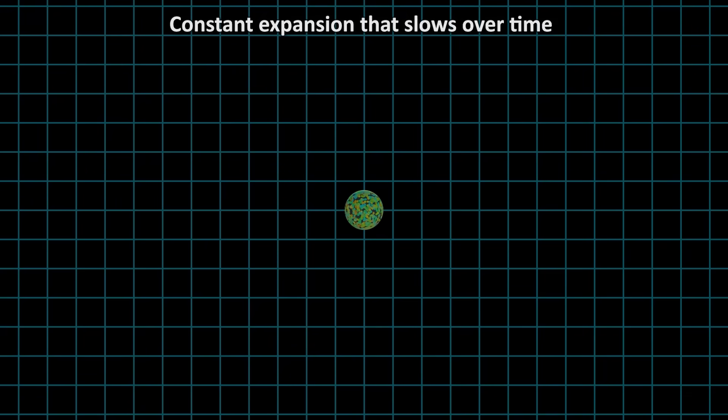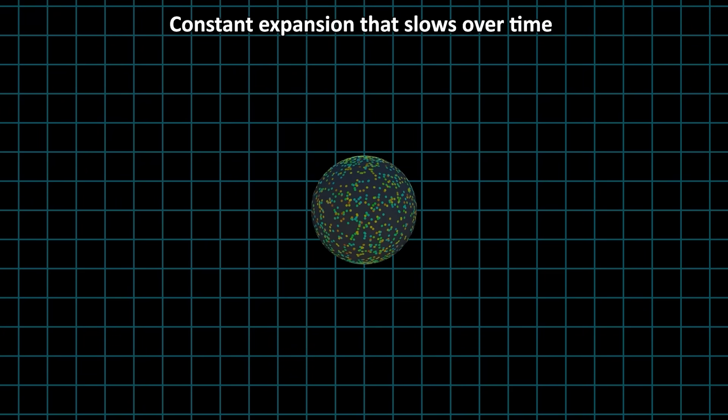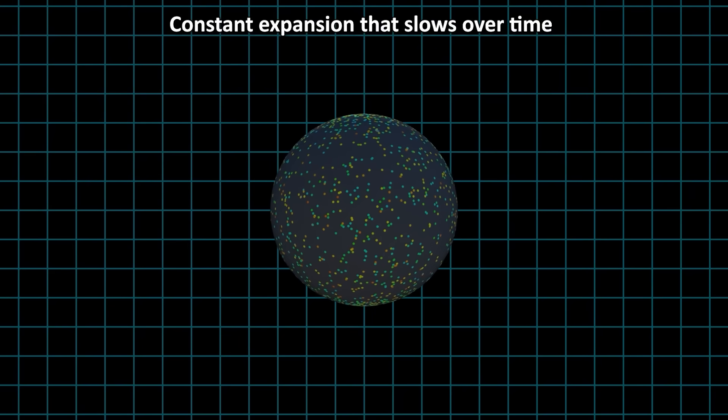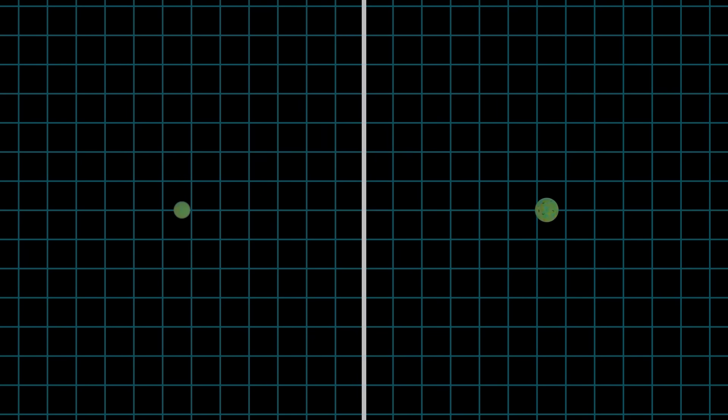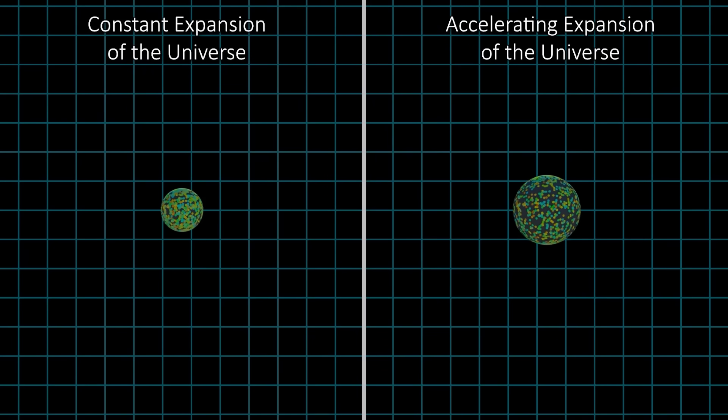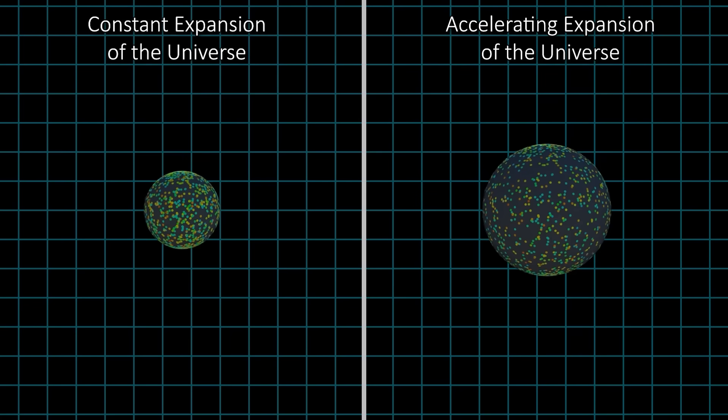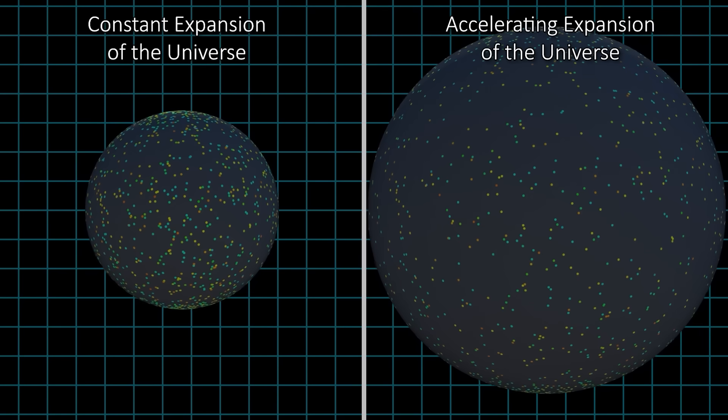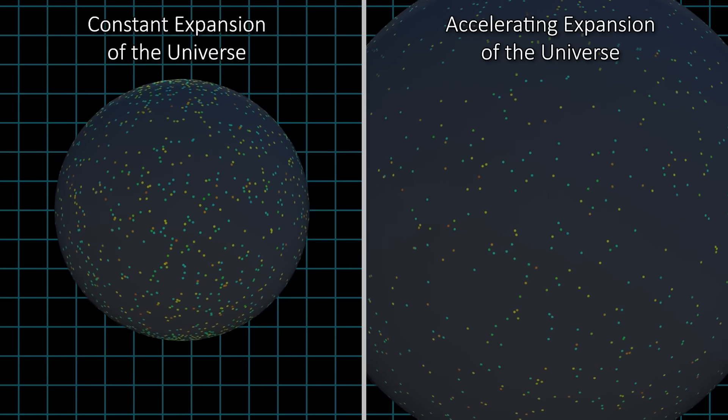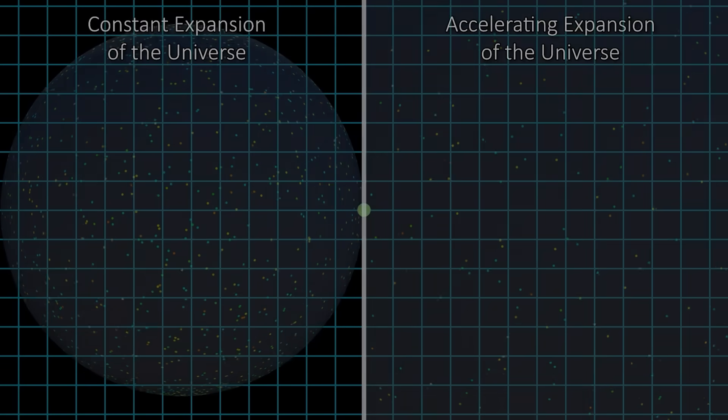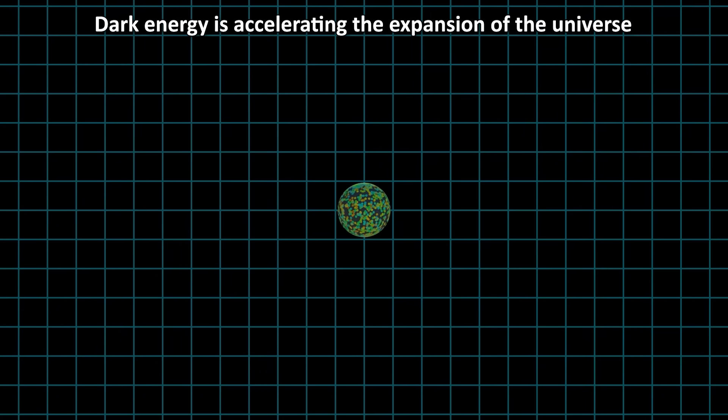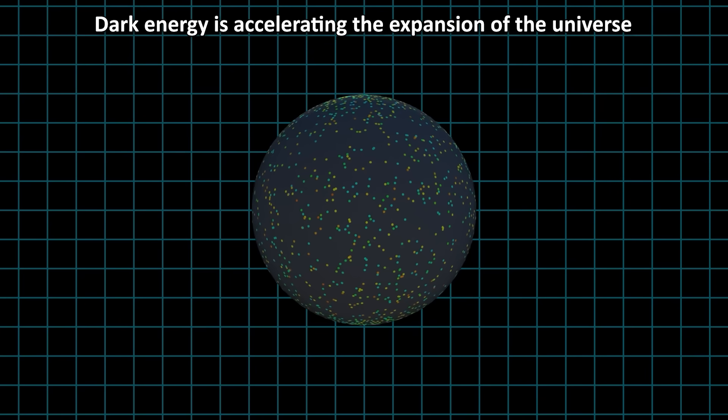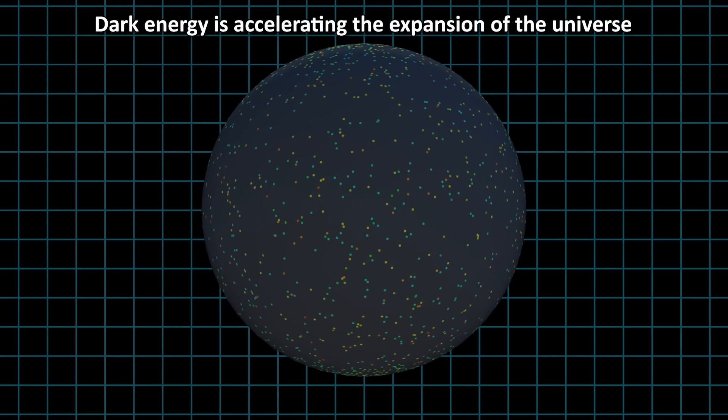For decades, astronomers assumed the expansion of the universe should be slowing down due to the gravitational pull of matter being in opposition to the push of expansion. But in the early 1990s, something completely unexpected was discovered. Distant supernovae observations showed that the universe is not just expanding, but that this expansion is accelerating, meaning it's expanding faster and faster. Something is pushing space apart, acting like an anti-gravity force. Scientists call this mysterious effect dark energy.